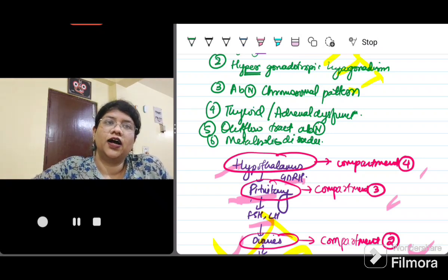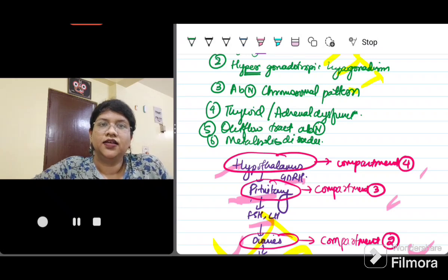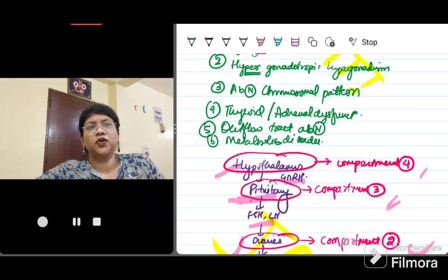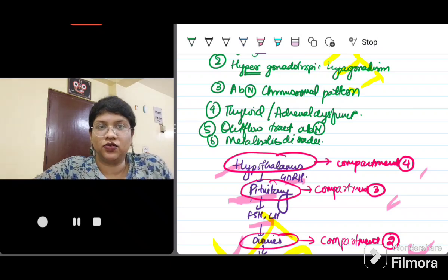Next is your thyroid or any adrenal dysfunction also affecting the menstrual cycle. Then any outflow tract abnormality, very important as imperforate hymen or transverse vaginal septum. Metabolic disorder can be early PCOS or obesity.